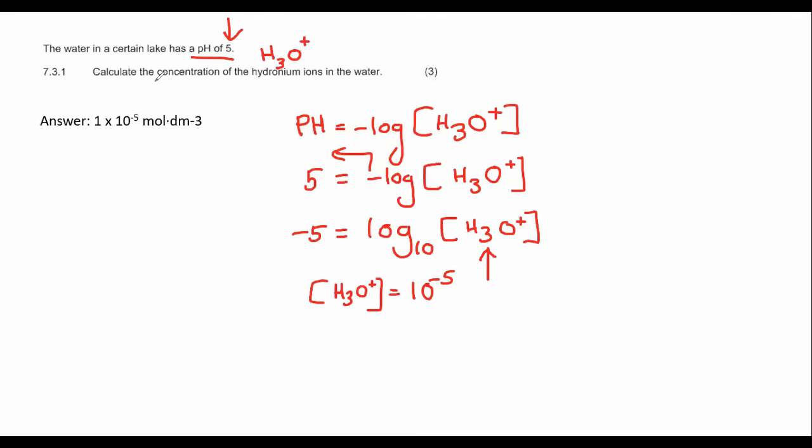The answer said calculate the concentration of hydronium ions. And so the concentration of hydronium ions is 10 to the negative 5, and then the unit of concentration is mole per decimeter cubed.